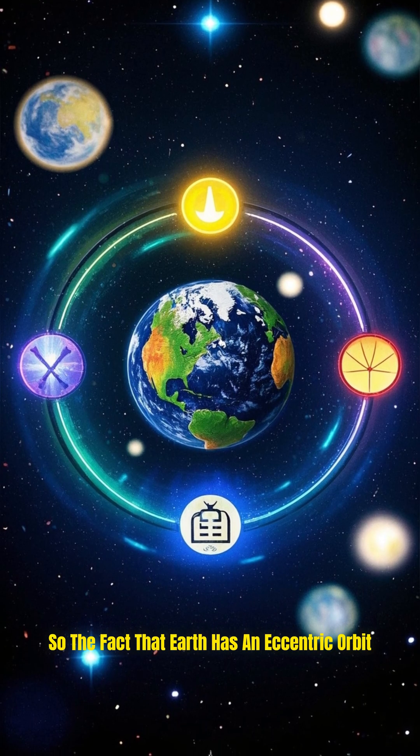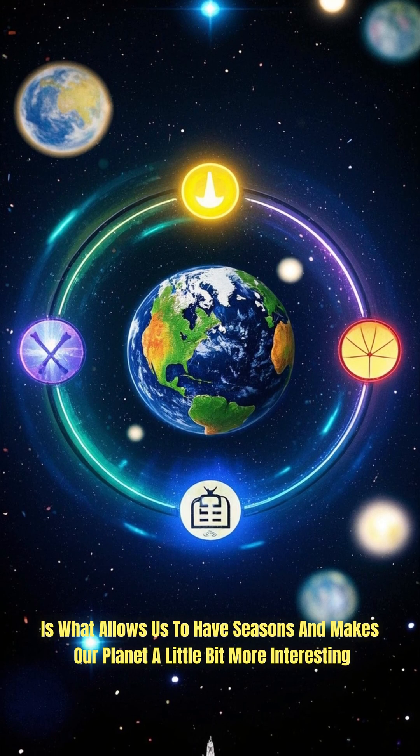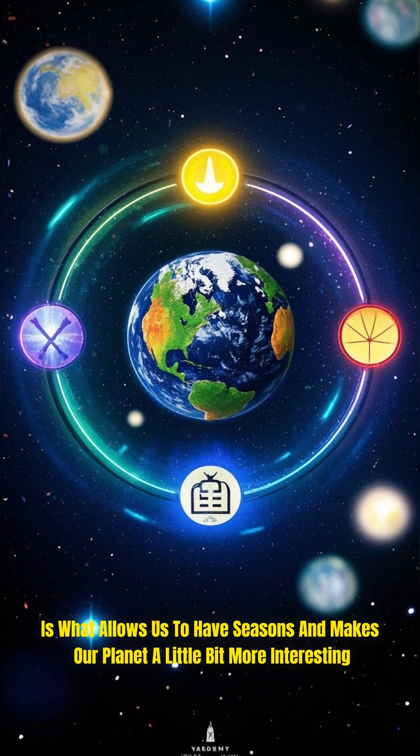So the fact that Earth has an eccentric orbit is what allows us to have seasons and it makes our planet a little bit more interesting.